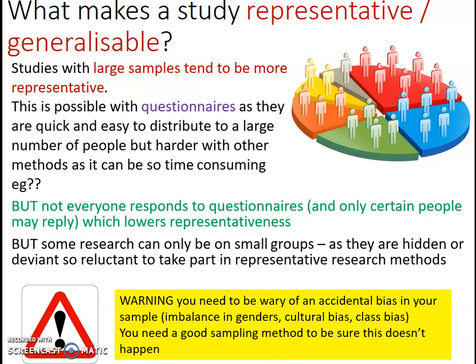A quick warning: be aware of accidental bias in your sample. You might try really hard to accurately reflect your target population, but it's worth double-checking your sampling method. What if by complete fluke 80% of your sample are female and only 20% are male? Or everyone in your study is white, or only middle-class people agreed to take part? Then you're only getting their perspective on the issue. You need a good sampling method to ensure this doesn't happen, which we'll look at in another lecture.